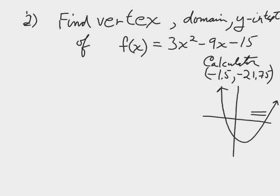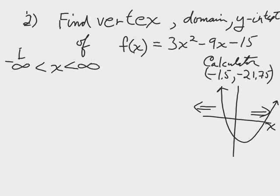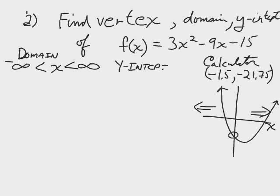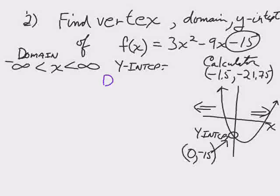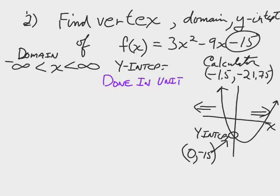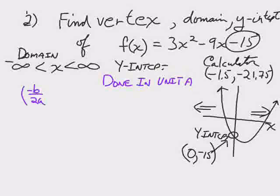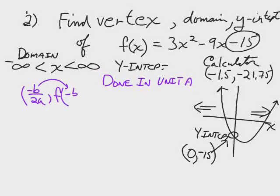When you do it with the calculator, it tells you the answer is negative 1.5 and negative 21.75 for the vertex. Obviously that's wrong. It shouldn't be negative 1.5. So I just wrote it down wrong. It's positive 1.5. The domain is always for these types of functions from negative infinity to positive infinity.